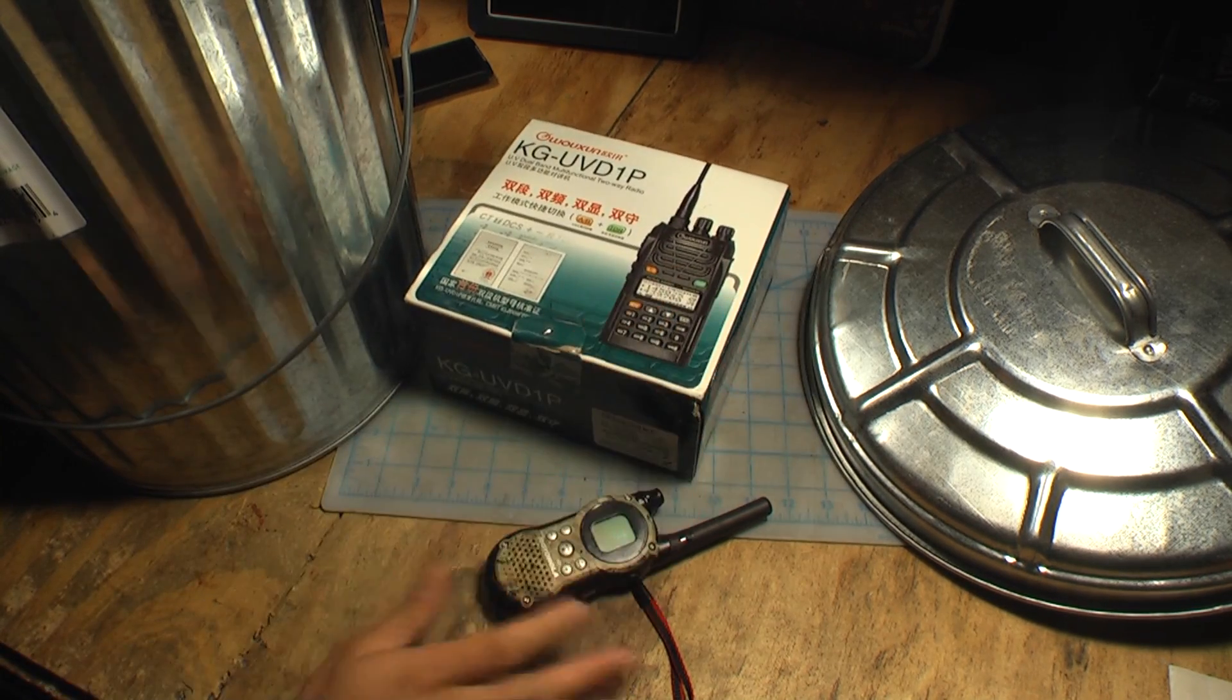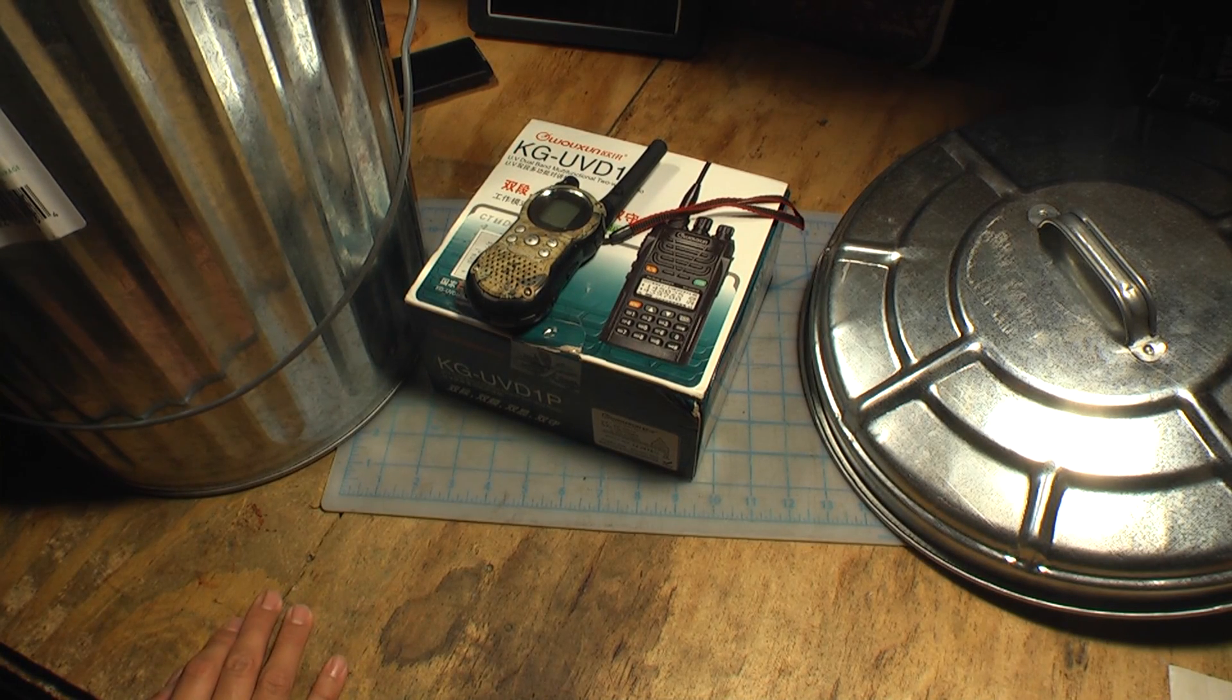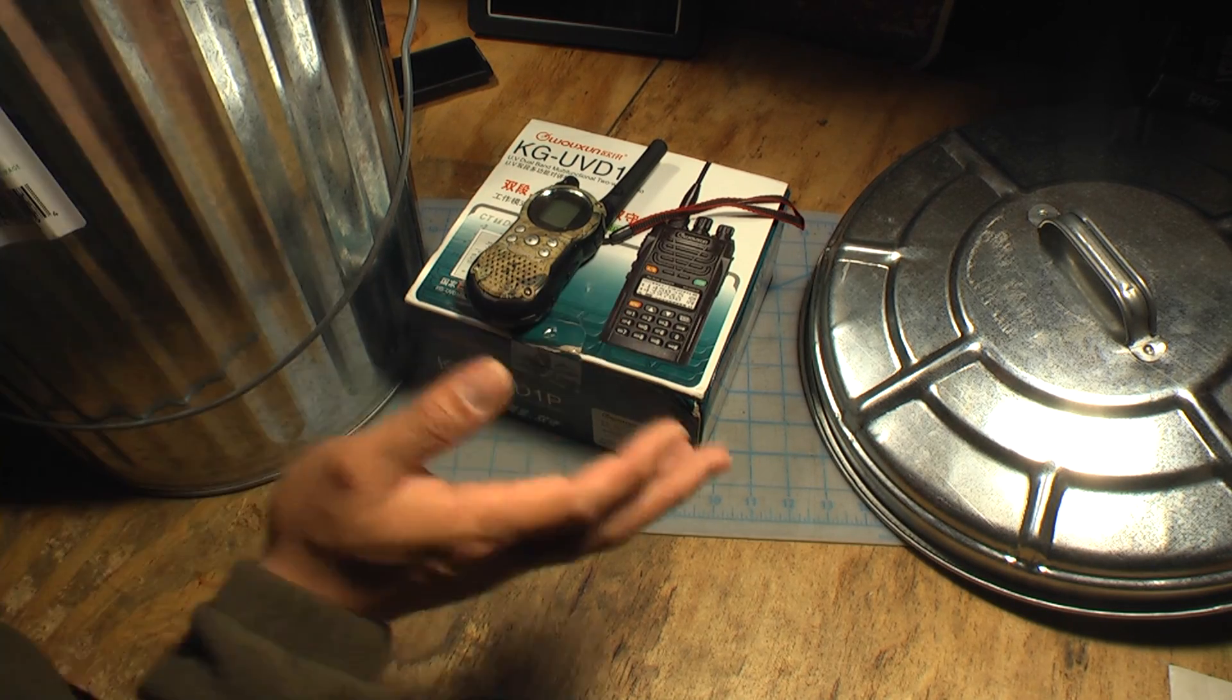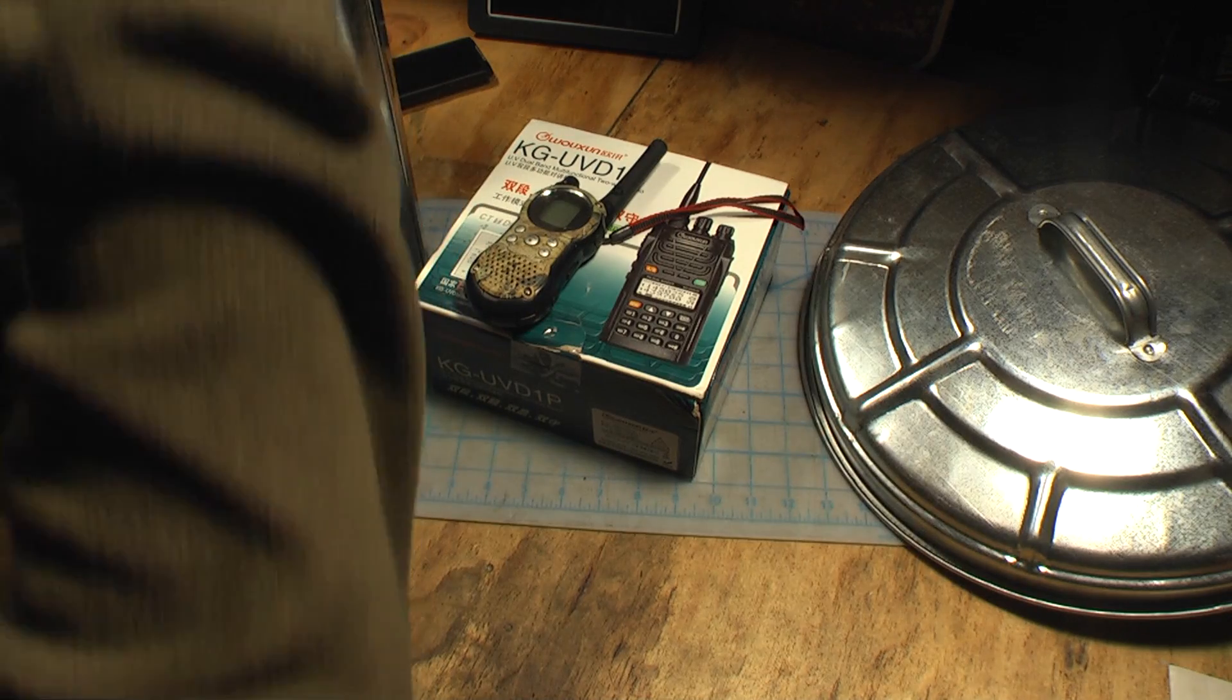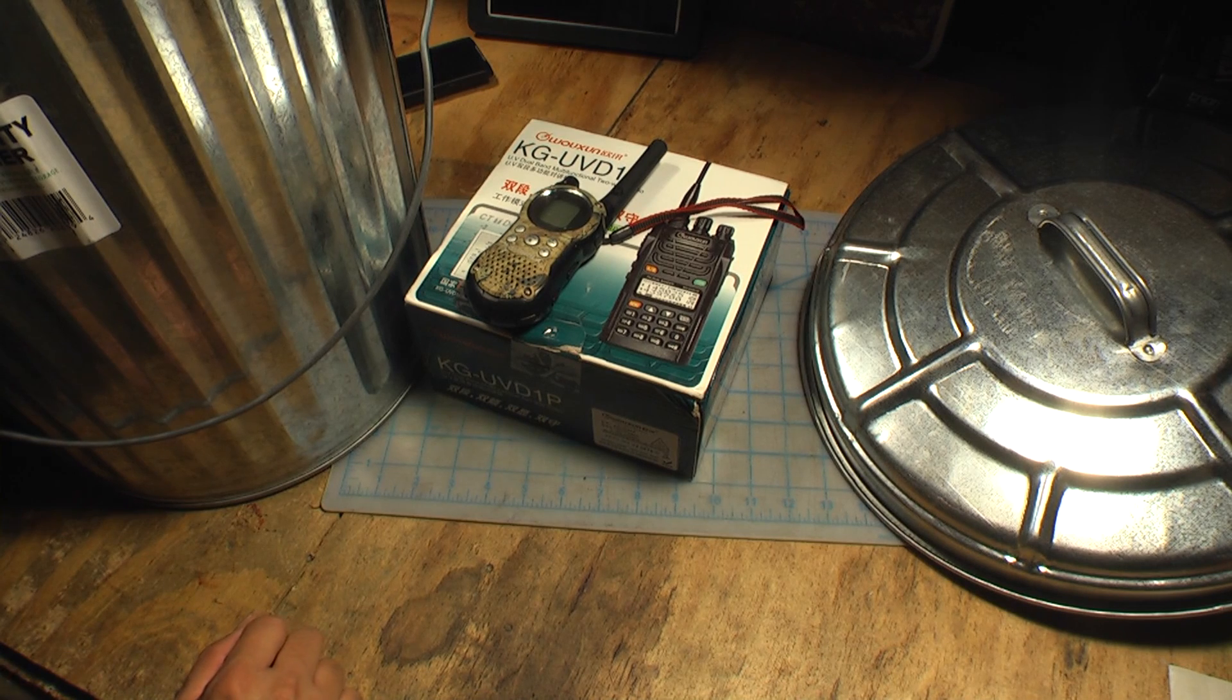Obviously this ham radio and this walkie talkie will be rendered useless under an EMP type situation. So what do you do to build your own Faraday cage? Well, like I showed you, this galvanized trash can is perfect for that kind of stuff.